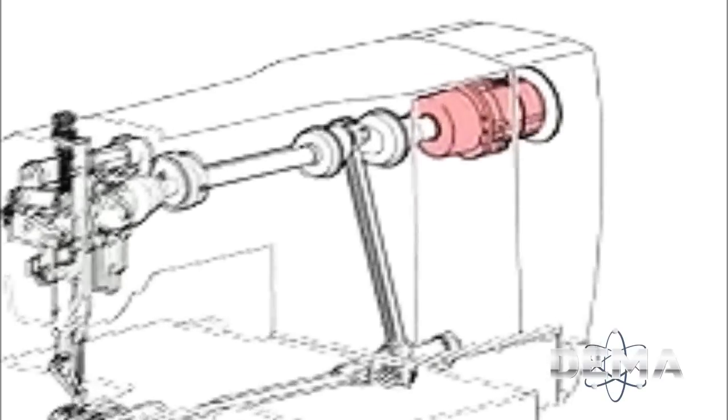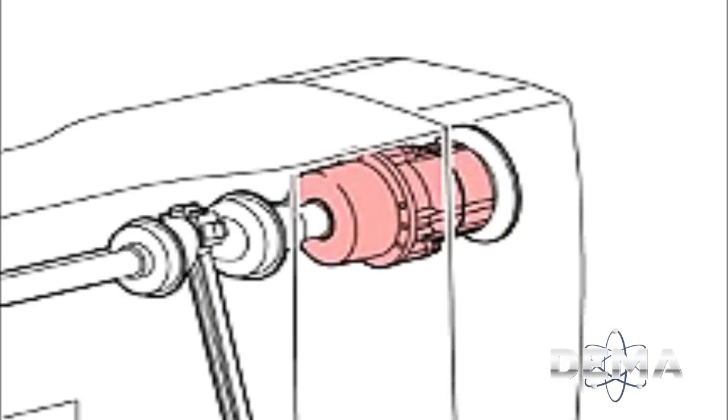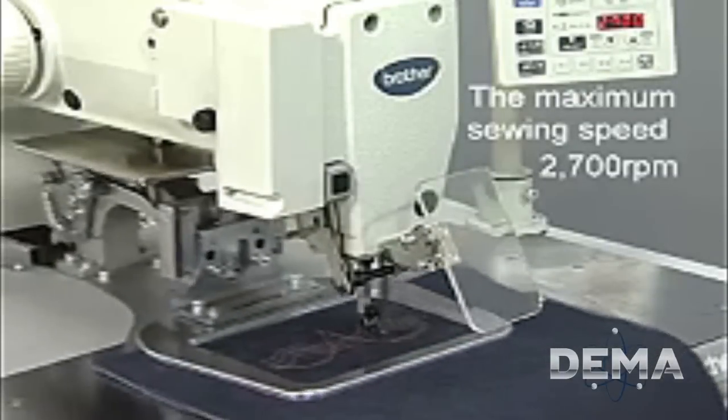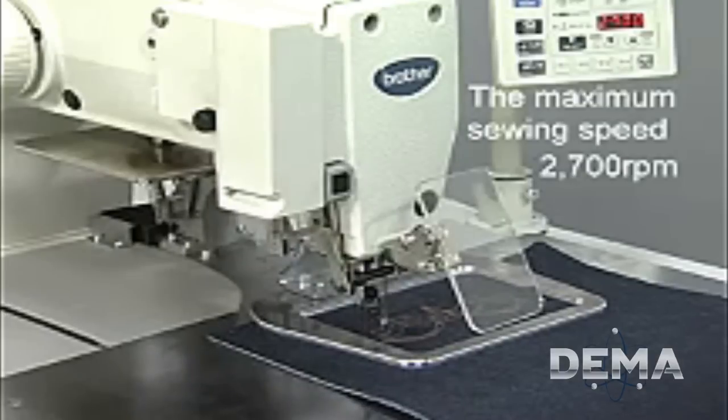On the BAS311G and BAS326G, Brother's original direct drive motor has been adopted, which will perform at a maximum sewing speed of 2700 RPM.